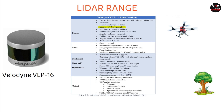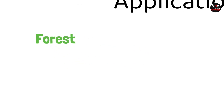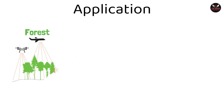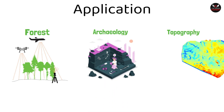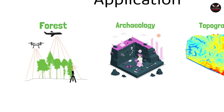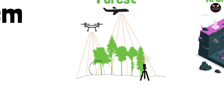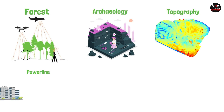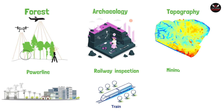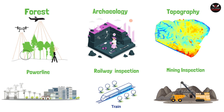Now let's discuss application. This is an important parameter in LiDAR sensor selection. For example, in forest or archaeology surveys, canopy penetration — the number of channels and ground returns — plays an important role. On the other hand, in power line, railway inspection, and mining inspection, the number of returns is less important.